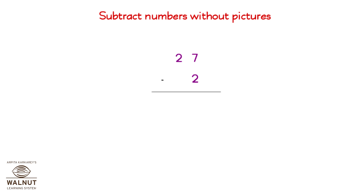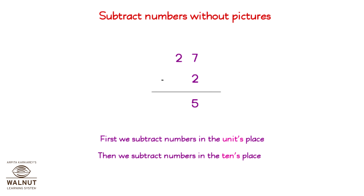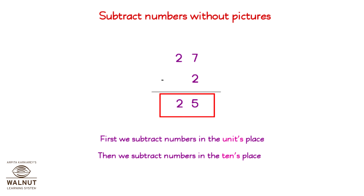Let's try 27 minus 2. We start from the left and then keep going to the right. First, we subtract numbers in the units place: 7 minus 2 is equal to 5. Then we subtract numbers in the tens place: 2 minus nothing is equal to 2. So that is our final answer. 27 minus 2 is equal to 25.